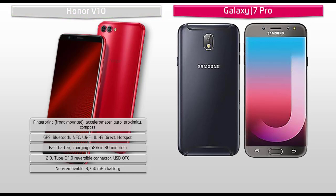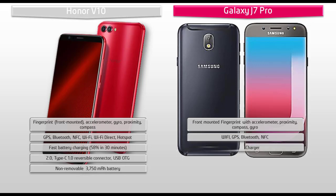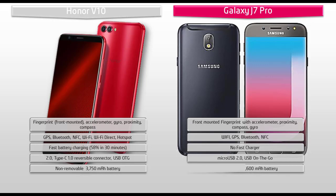Whereas Samsung Galaxy J7 Pro comes with a fingerprint sensor and it is front mounted, with accelerometer, proximity, gyro, compass, Wi-Fi, Wi-Fi direct, hotspot, FM radio, GPS, Bluetooth, NFC and 3.5 mm audio jack. It also comes with micro USB 2.0 and USB On-The-Go. Samsung Galaxy J7 Pro is equipped with a good battery backup and it is a non-removable 3600 mAh battery.